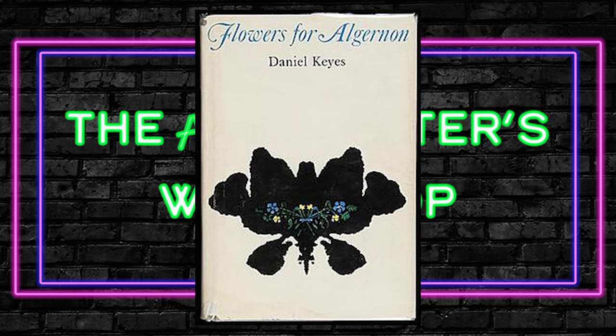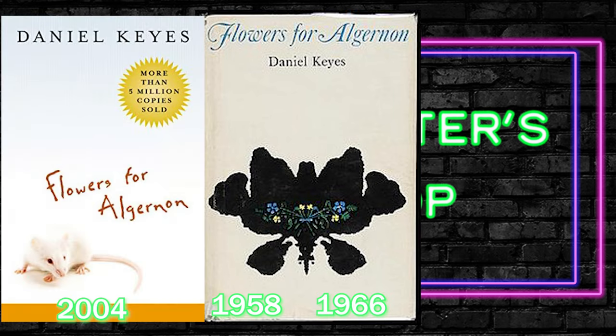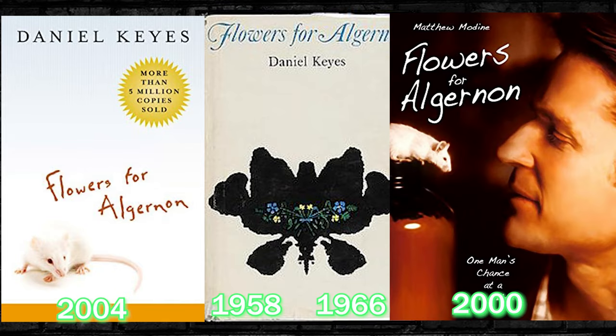Flowers for Algernon was written originally as a short story in 1958, before Keyes expanded it into a full-length novel in 1966. For the purpose of this video, we'll study the novel and we'll use clips from the film adaptation directed by Jeff Blechner in the year 2000.